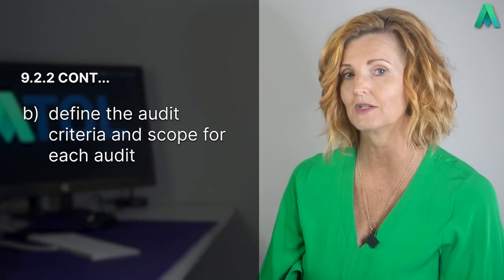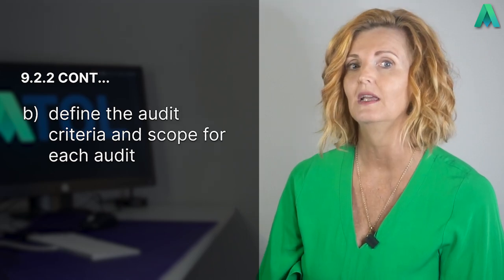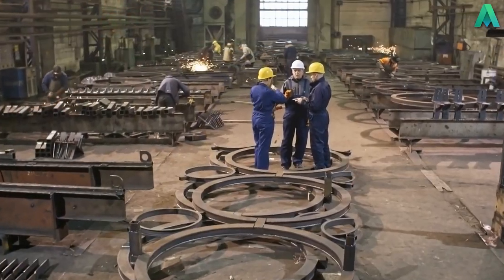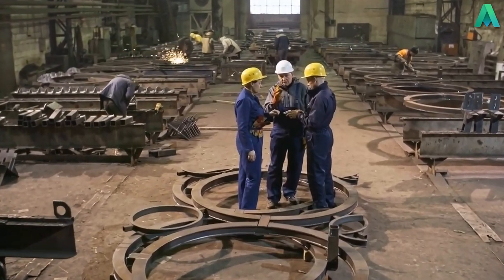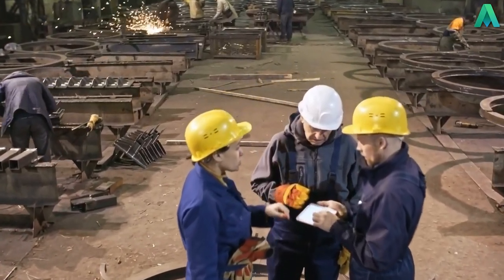We also require documented information to be retained as evidence of the audit results. So this means we need to see documented evidence of the outcomes of the audits conducted. This could be as simple as an audit report, which you need to ensure includes, as per point B, which states to define the audit criteria and scope for each audit. So in your audit report, you would include a field to document the audit criteria — which is what you are auditing against, which could be a particular ISO clause or standard or even a specific activity or procedure — and then also include a field for the scope of the audit. The scope of the audit is the extent and boundaries, so this could be specific locations, activities, departments and so on.